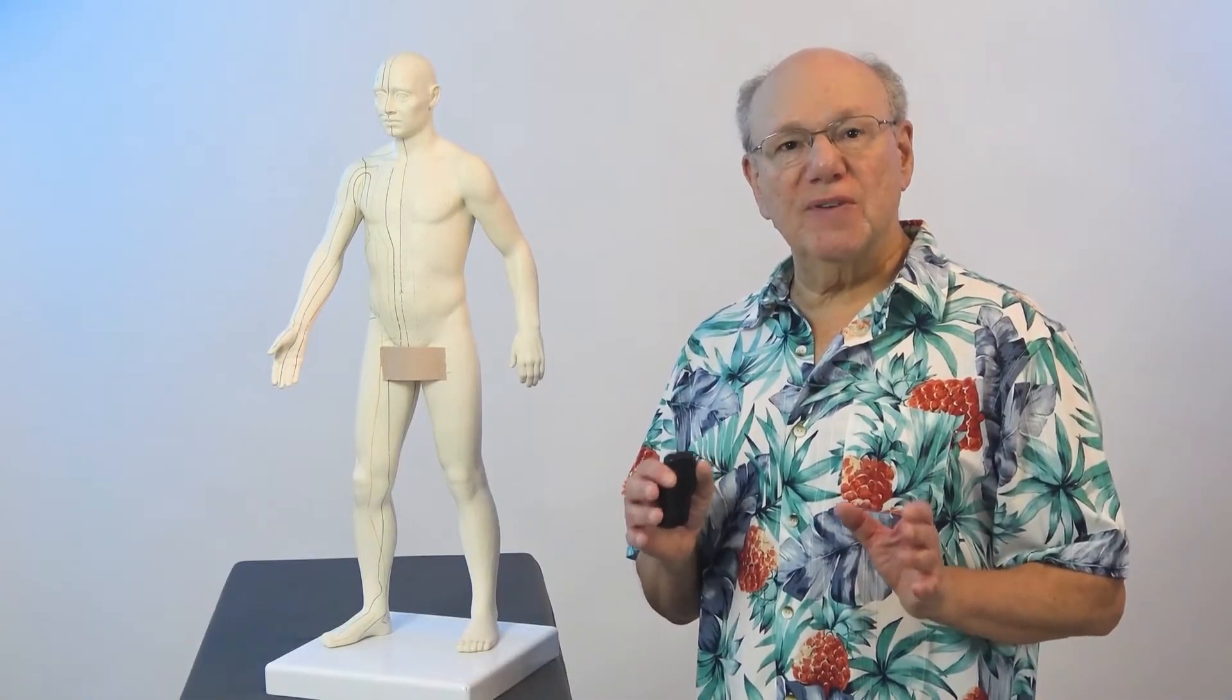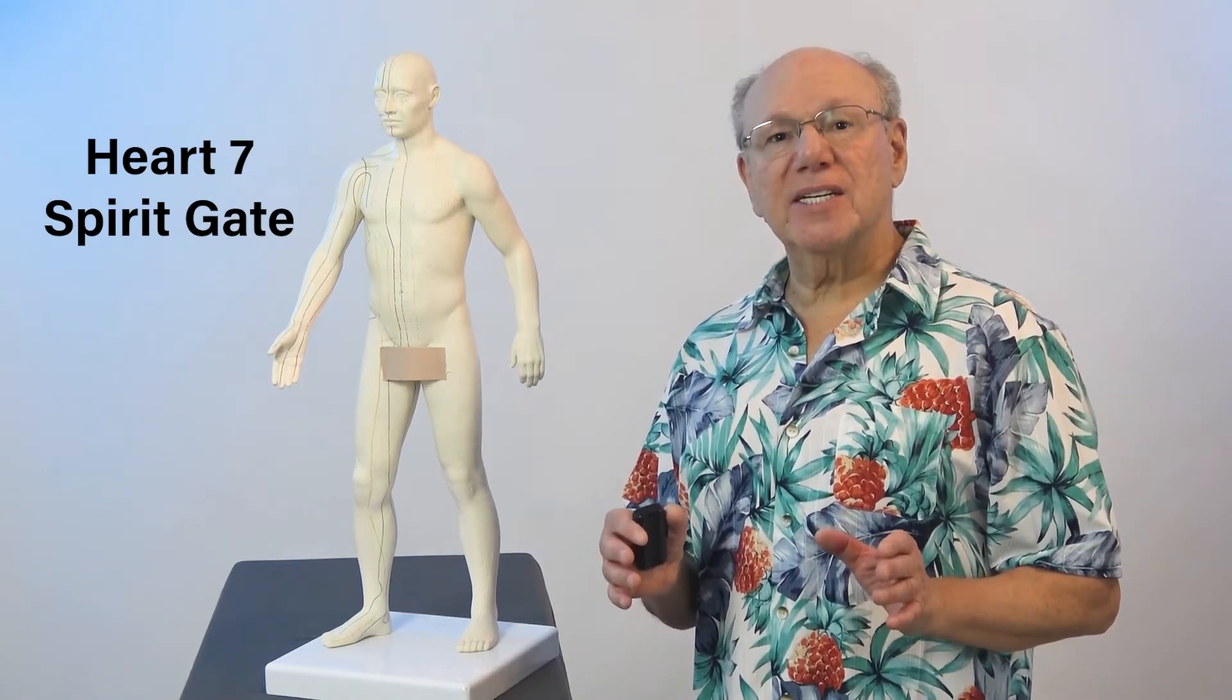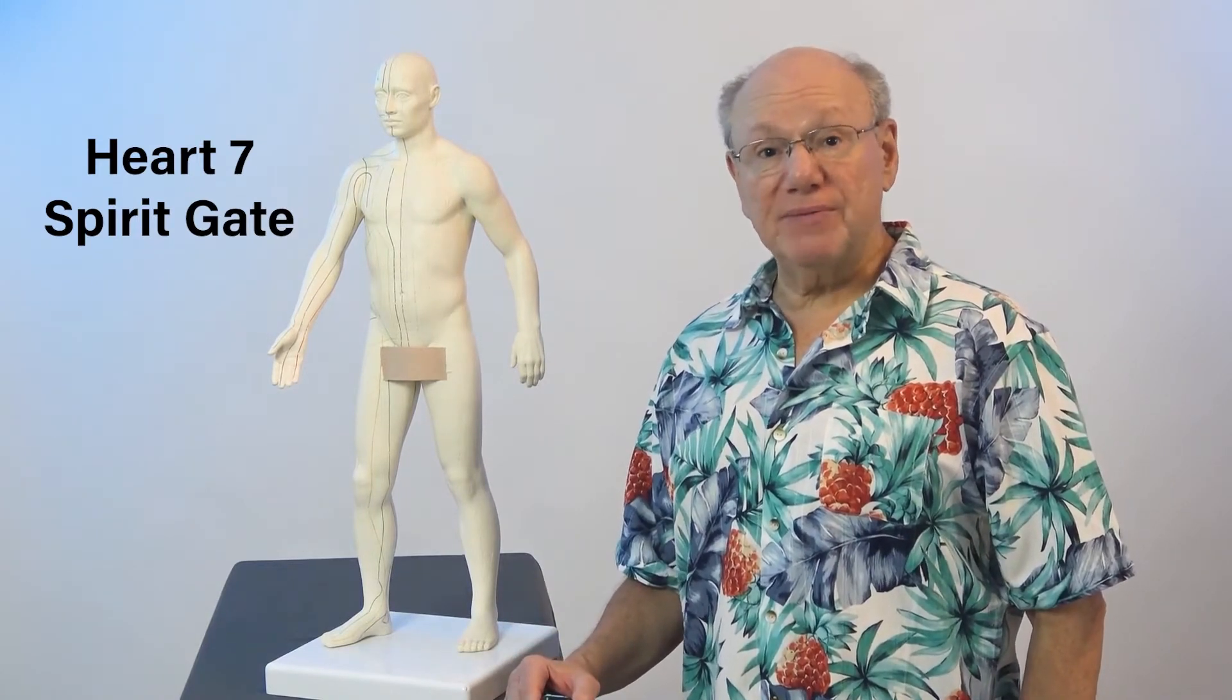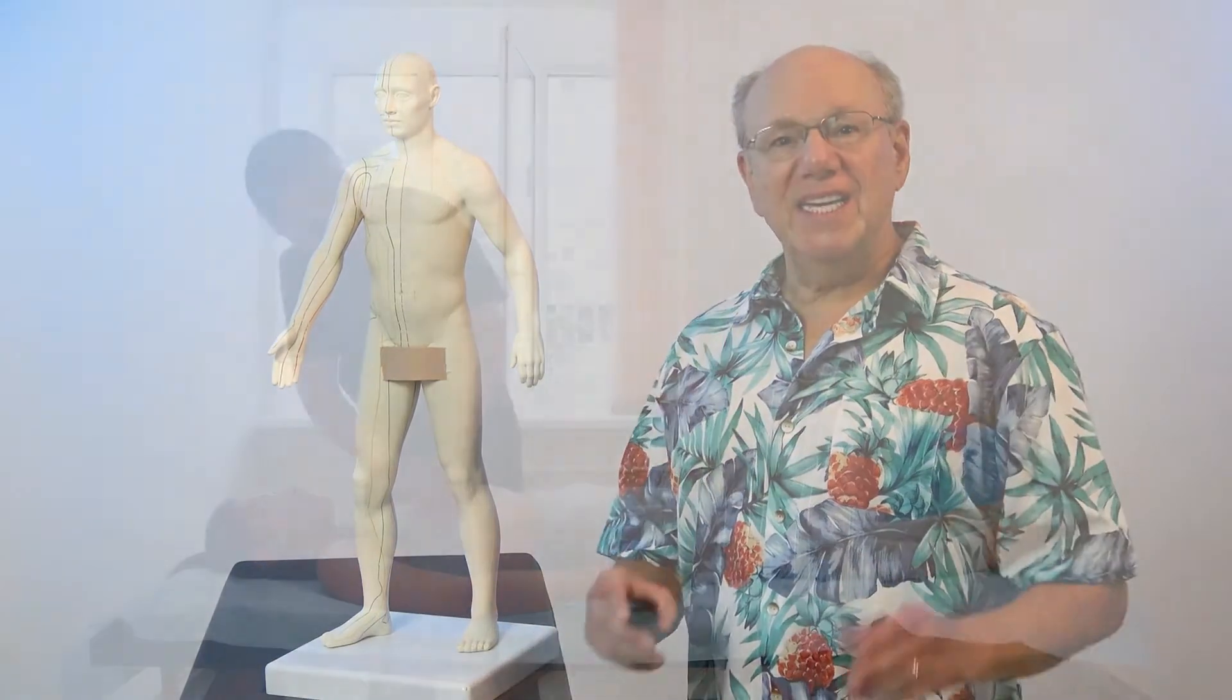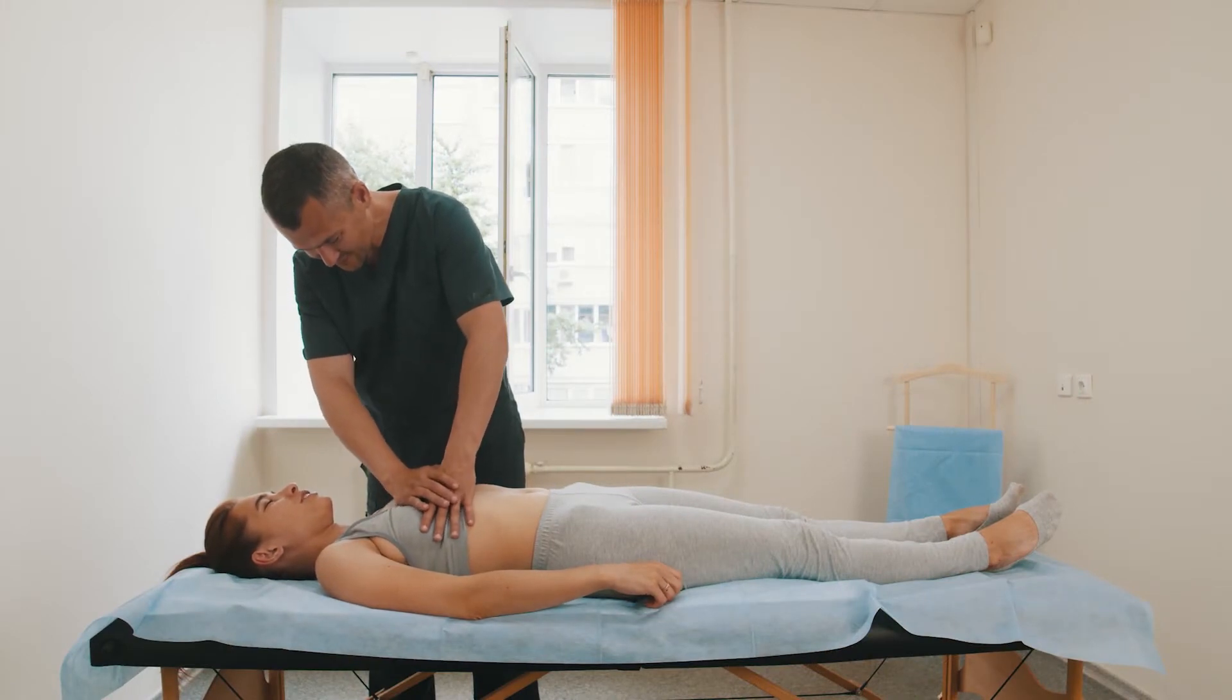The next point for vagus nerve activation is Heart 7. Heart 7 is known as Spirit Gate. Research has shown that Heart 7 has a positive effect on brain function. In addition to stimulating the vagus nerve, Heart 7 is used to help with chest pain.